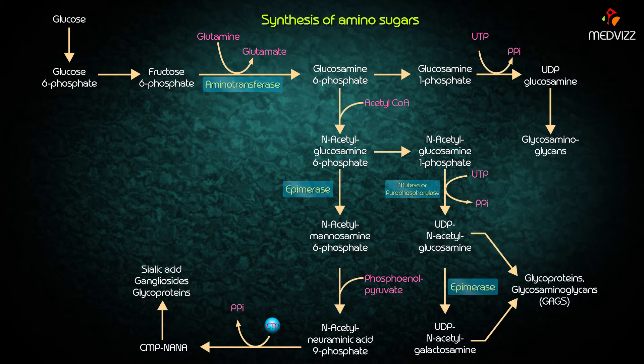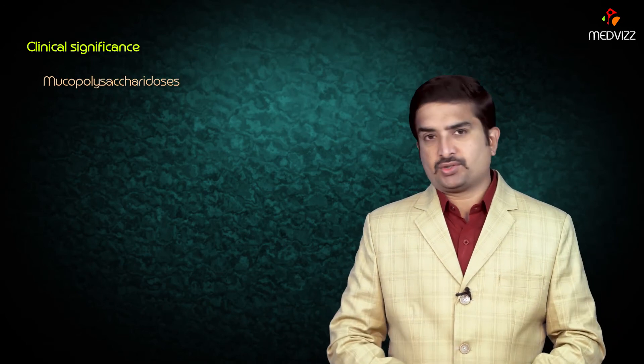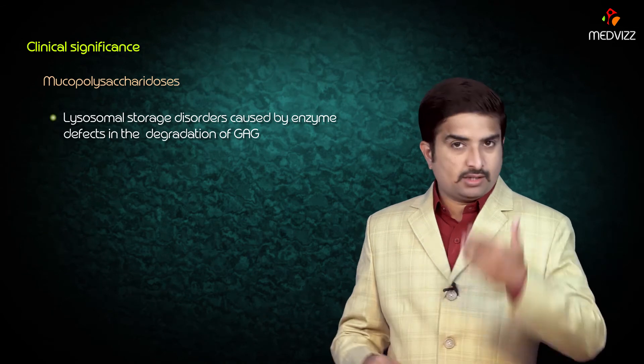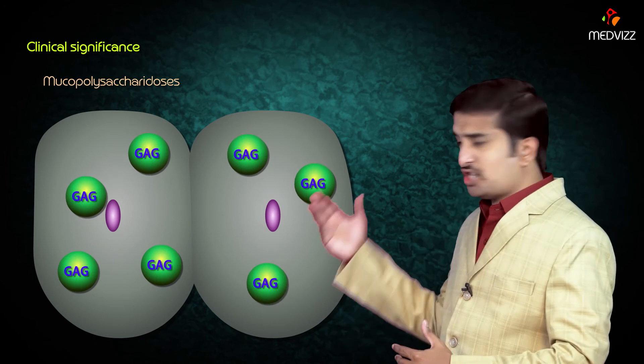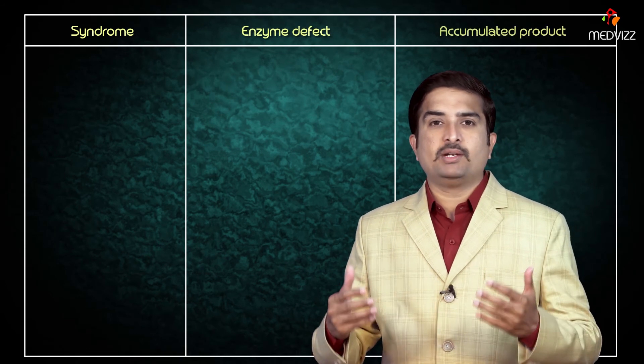The clinical significance related to amino sugar synthesis involves mucopolysaccharidoses, which are lysosomal storage disorders caused by enzyme defects in the degradation of glycosaminoglycans. They are characterized by accumulation of GAGs in various tissues, resulting in skeletal deformities and mental retardation. The following table represents various mucopolysaccharidoses with their defective enzymes and accumulated products.